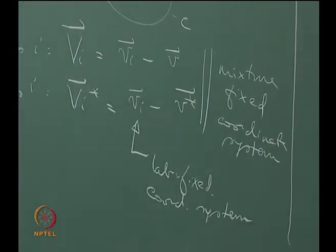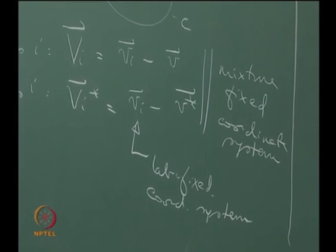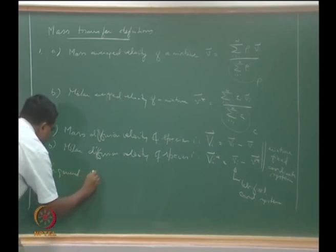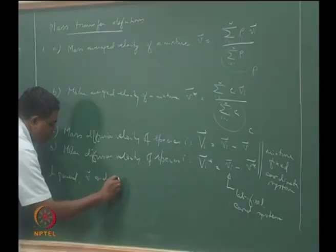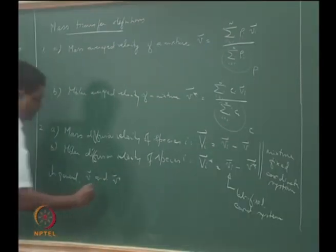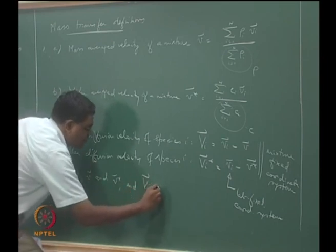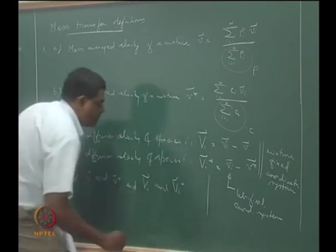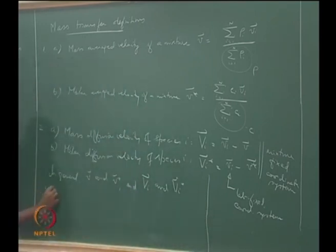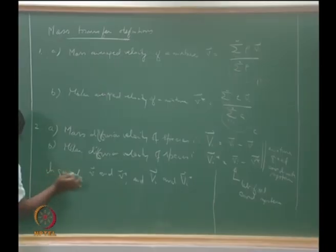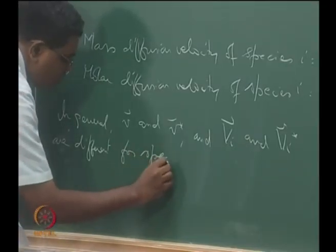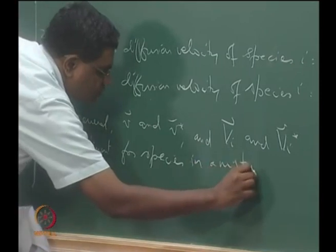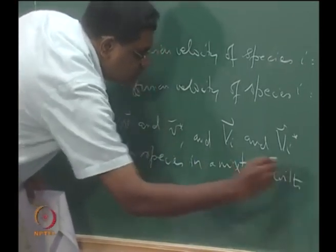In general, small v and small v-star, and capital Vᵢ and capital Vᵢ-star, are different for species in a mixture with dissimilar molecular weights.